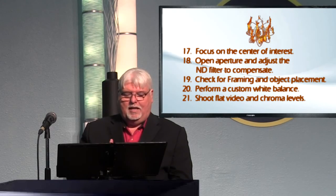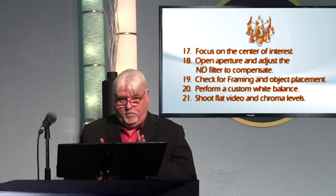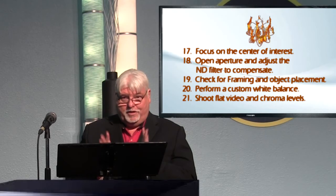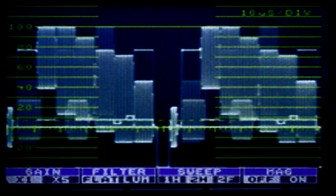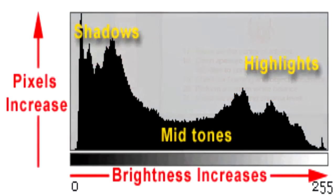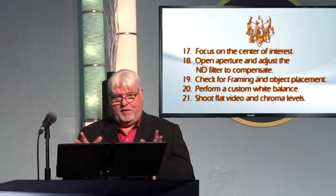Make sure your highlights are not blown out and your blacks are not crushed. You actually want to decrease it a little bit — shooting flat — so you can increase it in post using color correction. Whites should be around 90 IRE and blacks around 7.5 IRE on a waveform monitor. On a histogram, leave space on both ends so you have room to expand during color correction.